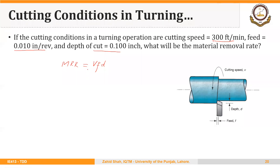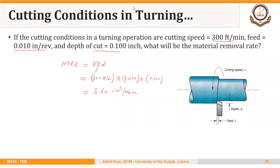It is important to take care of units. The cutting speed of 300 feet per minute is converted to inches per minute by multiplying by 12. Multiplying by the feed of 0.010 inches and depth of cut of 0.100 inches — all in inches — gives a volumetric material removal rate of 3.60 inches cubed per minute.